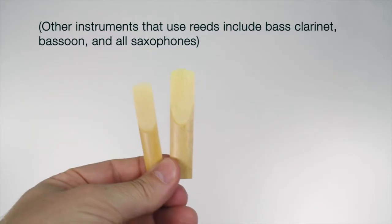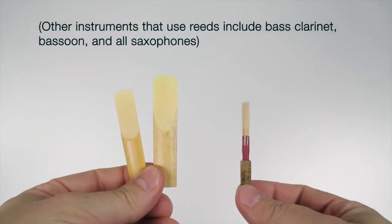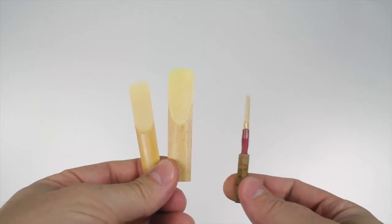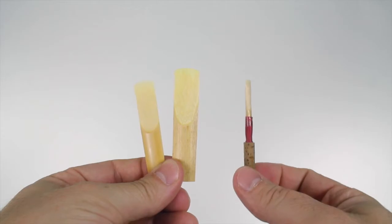You can see it's a little bigger. This is an oboe reed, and it looks kind of strange. It's actually two little reeds tied together. It's called a double reed.